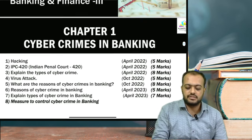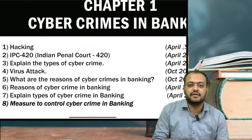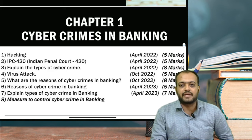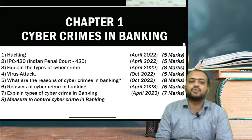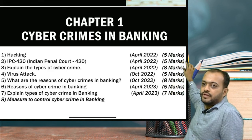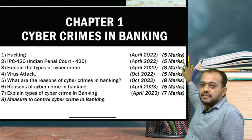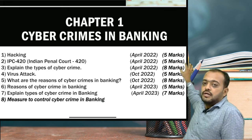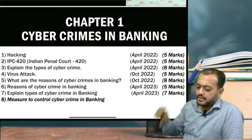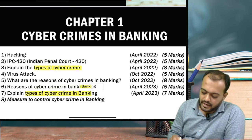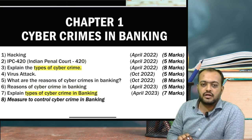Chapter 1 — students, in this, hacking was asked as a short note. Cyber crime includes hacking as an important topic. IPC 420 — Indian Penal Code 420 — was asked for 5 marks. And types of cyber crime was asked for 8 marks. Now, let me clearly tell you once — there is a difference between two separate questions: types of cyber crime is different, and types of cyber crime in banking is different. These are 2 separate questions — one asked for 8 marks, another for 7 marks. Do not get confused at all.